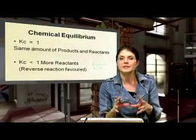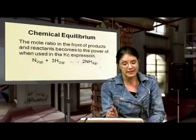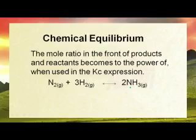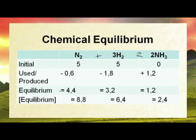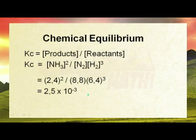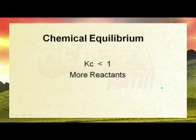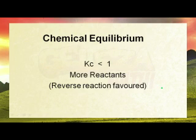Now let's substitute our values into the Kc expression. Using the balanced equation N₂ + 3H₂ ⇌ 2NH₃, the mole ratios become exponents on the concentrations. So Kc = [NH₃]² divided by [N₂]¹[H₂]³. Punching in the values gives us 2.5 × 10⁻³, which equals 0.0025. Since Kc is less than one, we have more reactants, and therefore the reverse reaction was favored.